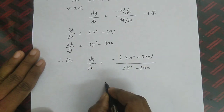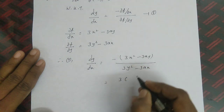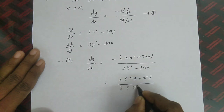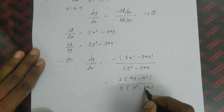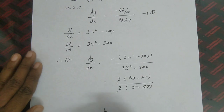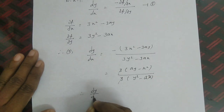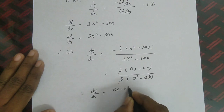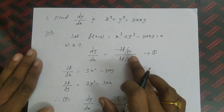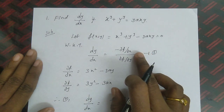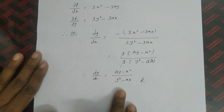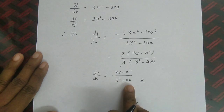Cancelling the 3 from numerator and denominator, therefore dy/dx = (ay - x²) / (y² - ax). For this type of problem: first write the formula, then find the partial derivatives with respect to x and y, and substitute into the result to get dy/dx = (ay - x²) / (y² - ax).